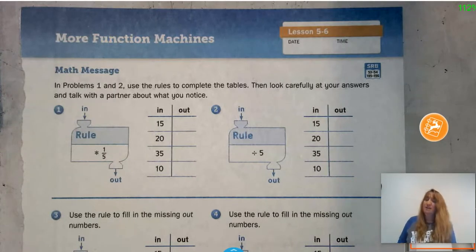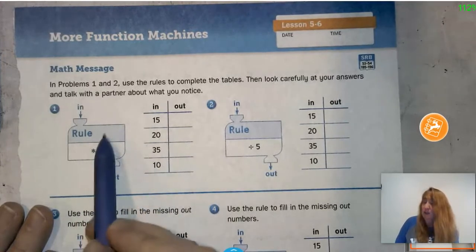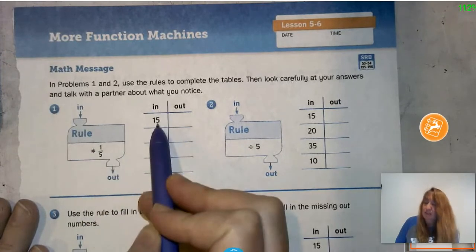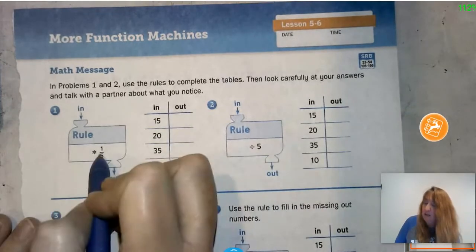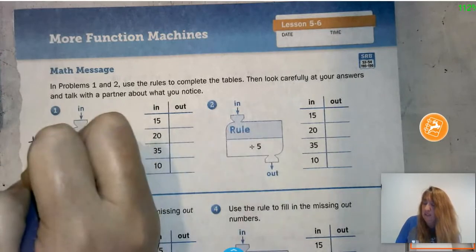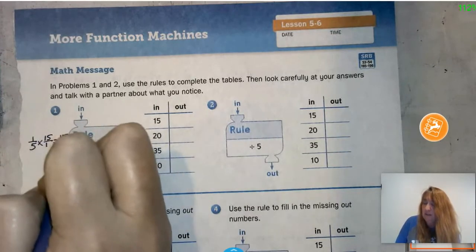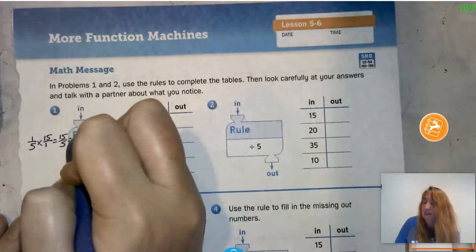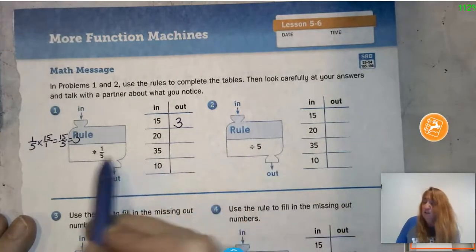So you're my partner in this. Let's look at our function machine — the rule is to multiply by 1/5. We put the number in, multiply by 1/5, and get our answer. So 1/5 of 15 would be 15/5. What is 15 divided by 5? Yes, it is 3, so we get 3 as our answer.